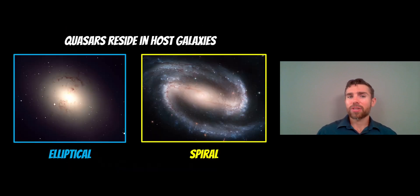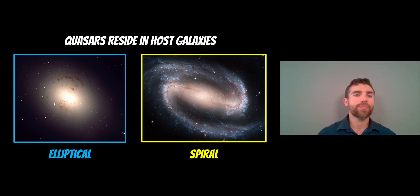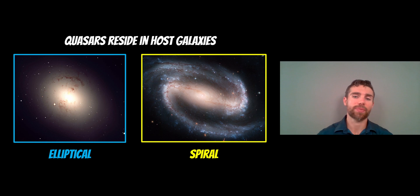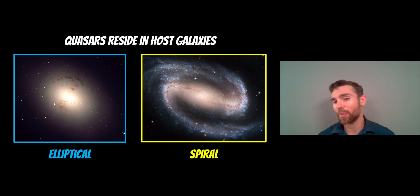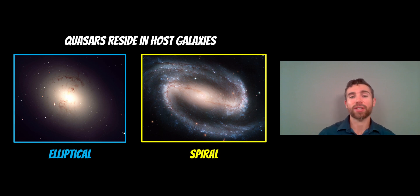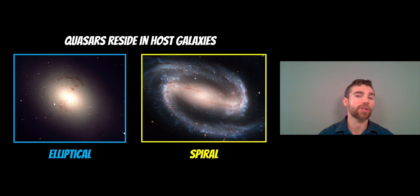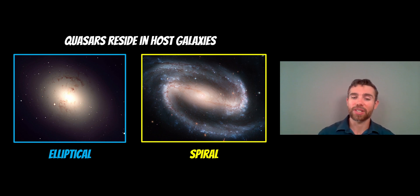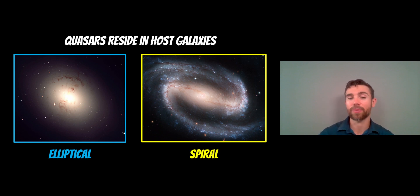Quasars are part of the galaxy, not the galaxy itself, so they can reside in a variety of different galaxies — elliptical galaxies, spiral galaxies; it doesn't really matter what sort of galaxy it is. A quasar can be hosted by quite a range of different galaxies, but the type of host galaxy does change what we see and affects the dynamics and behavior of the quasar.